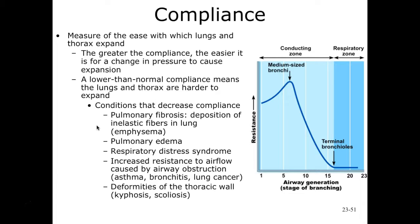We also have pulmonary edema, where we're going to have more collapse of the alveoli — obviously when they're collapsed we don't have good gas exchange. This collapse of the alveoli can also happen in respiratory distress syndrome. Then we have deformities of the thoracic wall, which is more of an anatomical abnormality. Kyphosis is an abnormal exaggerated curvature of the thoracic vertebrae, and scoliosis is a lateral curvature of the spine.